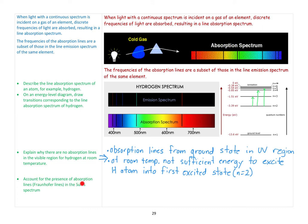To account for the presence of Fraunhofer lines in the sun's spectrum: the sun is a dense object releasing all colours, but it's mainly made of hydrogen and helium. As light from the sun passes through the surrounding atmosphere of hydrogen and helium, those atoms absorb wavelengths corresponding to their energy level gaps, so we see those narrow dark absorption bands in the sun's spectrum when observed with high-precision equipment.